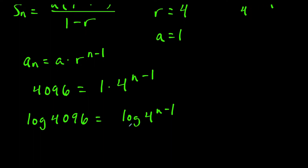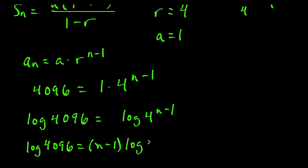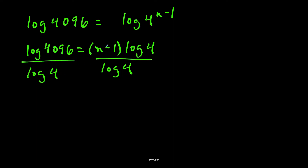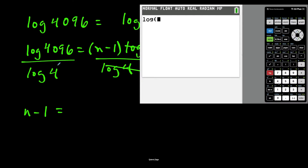I'm showing how to do this with logs in the event that n equals 700 — you're not going to sit there and find all 700 terms. Using the exponent property of logs, we bring the exponent in front: log 4096 equals n minus 1 times log 4. Dividing both sides by log 4 gives n minus 1 equals log 4096 divided by log 4, which equals 6. Adding 1 to both sides gives n equals 7.